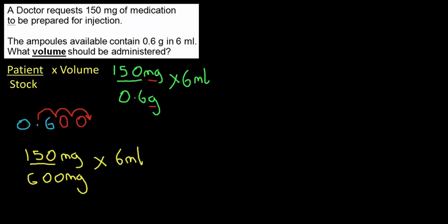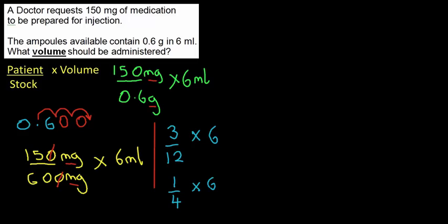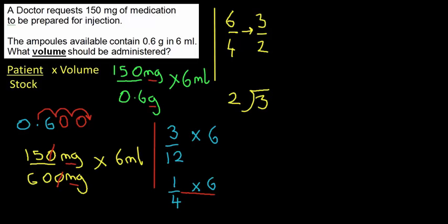The formula is now 150 milligrams over 600 milligrams, times 6 millilitres. Units match, so simplify. Both end in zero — divide by 10; then 5 goes into 15 three times and into 60 twelve times. Three goes into both top and bottom: 3 into 3 is 1, 3 into 12 is 4, giving 1 over 4. Times 6: only multiply the top, giving 6 over 4. Halve to give 3 over 2. Two into 3 goes once, remainder 1; go decimal, 2 into 10 is 5. Final answer: 1.5 millilitres.